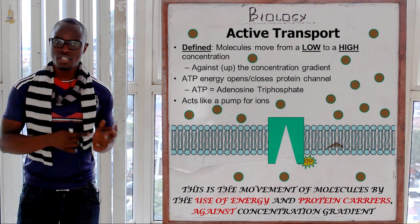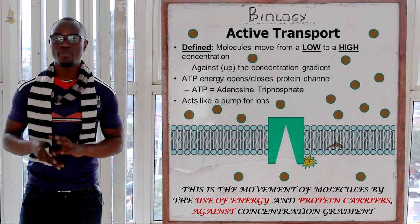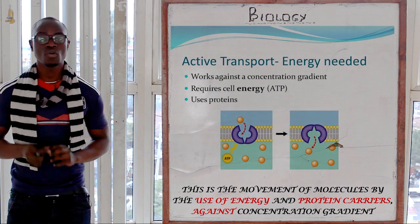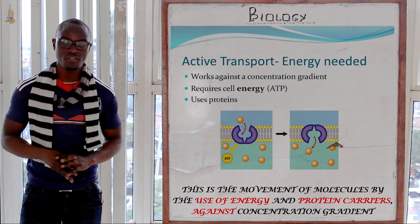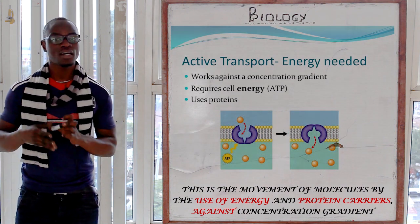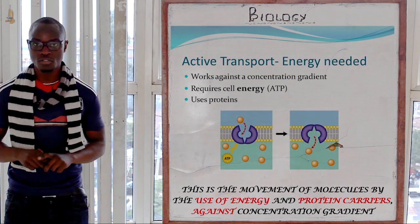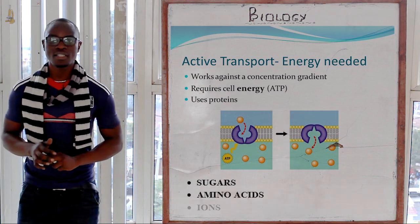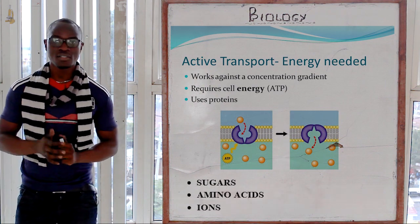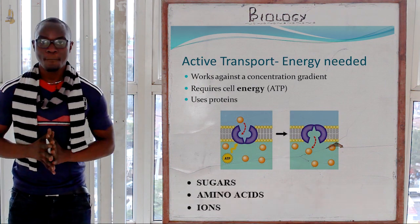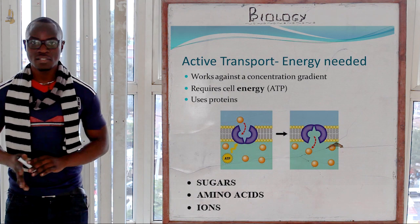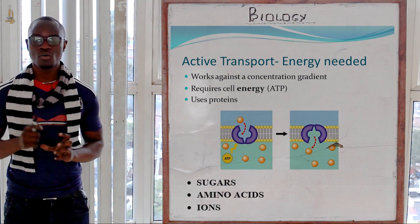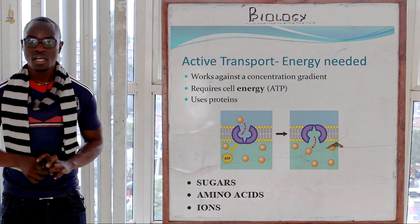For active transport to take place, there must be energy and carriers — both energy and carriers must be involved. Sugars, amino acids and ions are taken up by active transport inside living organisms. That is something you must always remember.